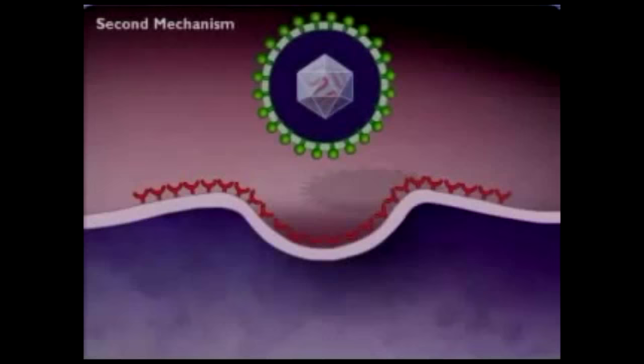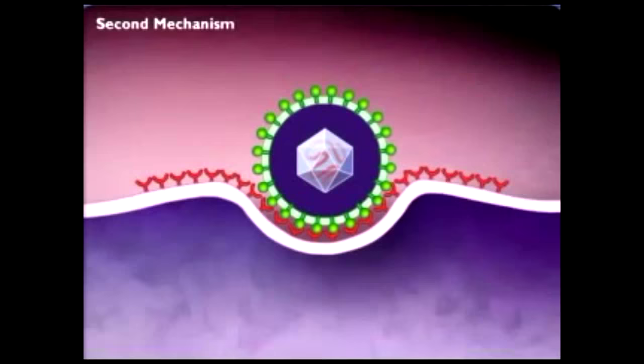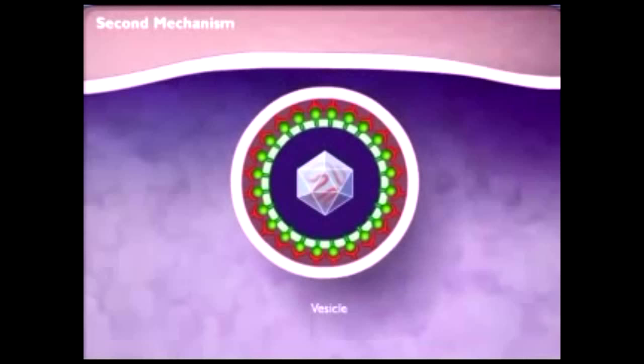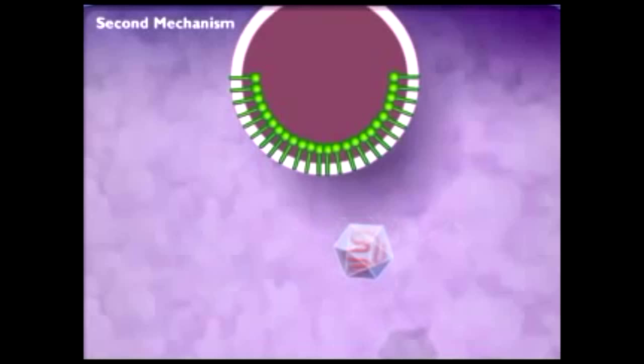In the second mechanism, the enveloped virus adsorbs to the host cell by specific proteins on its surface, and the virion is taken in by endocytosis. In this process, the host cell plasma membrane surrounds the whole virion and forms a vesicle. The envelope of the virion then fuses with the plasma membrane of the vesicle, and the nucleocapsid is released into the host's cytoplasm. The capsid protein is then removed, releasing the nucleic acid of the virus.